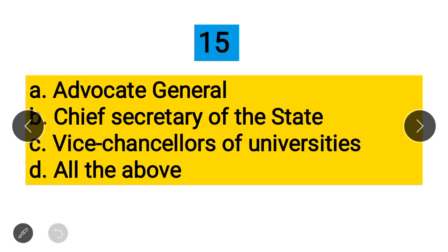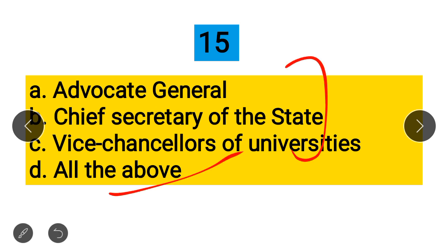Question 15: Among the following, which are appointed by the Governor? Option A: Advocate General, Option B: Chief Secretary of the State, Option C: Vice Chancellors of Universities, Option D: All of the Above. The correct answer is All of the Above — all of these are appointed by the Governor.